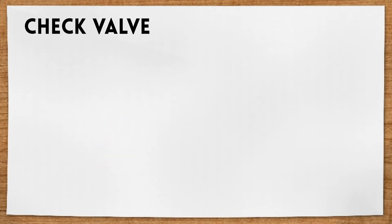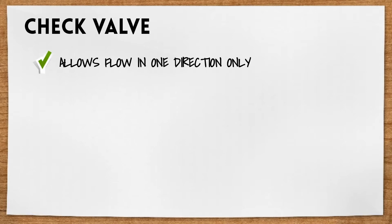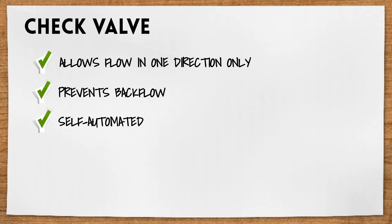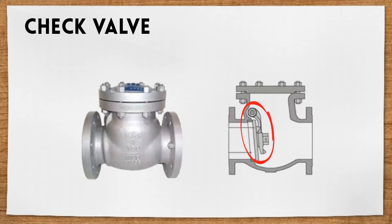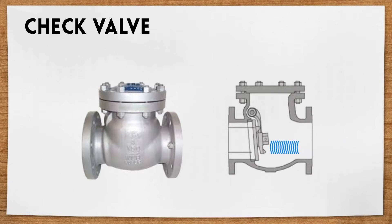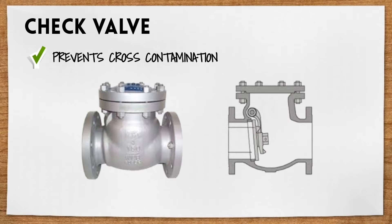A check valve is a little different. A check valve allows flow in one direction and automatically prevents backflow when fluid in the line reverses direction. They're one of the few self-automated valves that don't require assistance to open and close. The check valve has a flap that will open when the water flows in the correct direction, but it'll stay shut should the water reverse direction. We use check valves as backflow preventers to prevent cross-contamination.